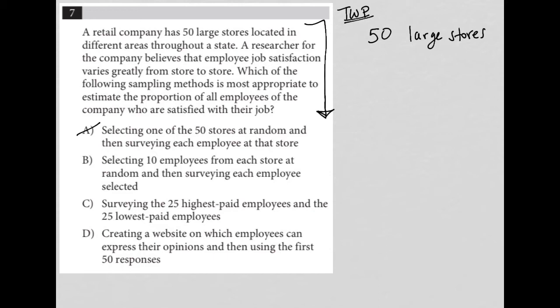Choice B says: selecting 10 employees from each store at random and then surveying each employee selected. That's better than choice A because at least you're sampling employees from all 50 stores, but we're only getting 10 of them. I'm not sure if that's enough, but I'm not going to cross out B — that's a decent process to use.